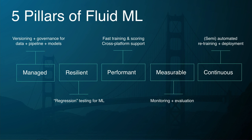The first pillar is managed: how do you make sure there's a versioning and governance strategy in place for your models? An enterprise could have thousands of models. The second is resilient: how do you make sure you have tested all the error conditions? The third is performant: most enterprises need the model to score in milliseconds, not minutes — a fraud needs to be caught in milliseconds. The fourth is measurable: how do you monitor it and make sure the model can alert when the score goes down? The fifth is continuous: how do you add a feedback loop to make sure the model is constantly learning? The first three are about always on, and the last two are all about learning.